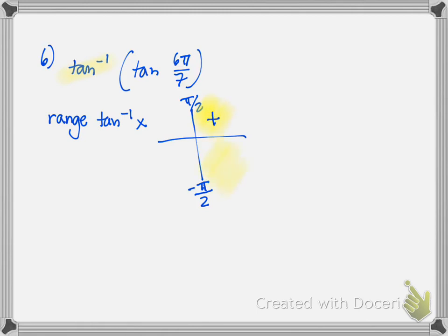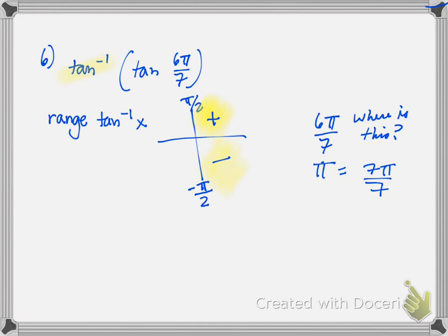If the value is positive, I'm going to go to quadrant 1; negative goes to quadrant 4. Let's check out 6π/7. You could either change this into degrees, or you can use my trick of setting π equal to 7π/7 as a common denominator. So 6π/7 is a little bit smaller than that, meaning I know I'm in quadrant 2.